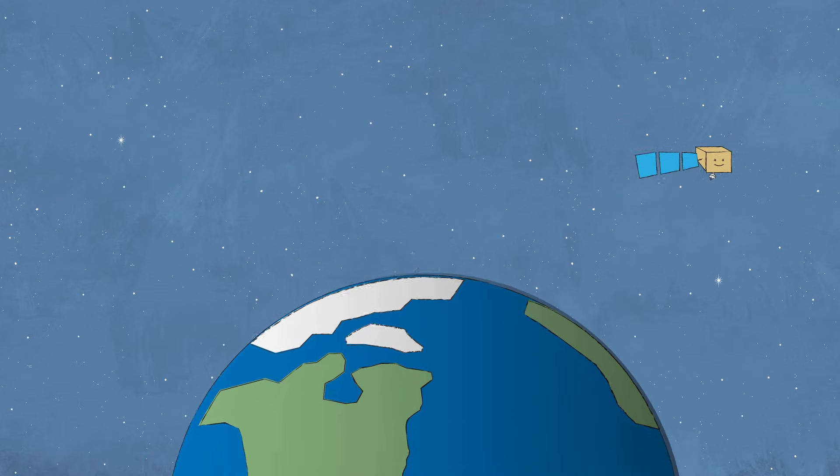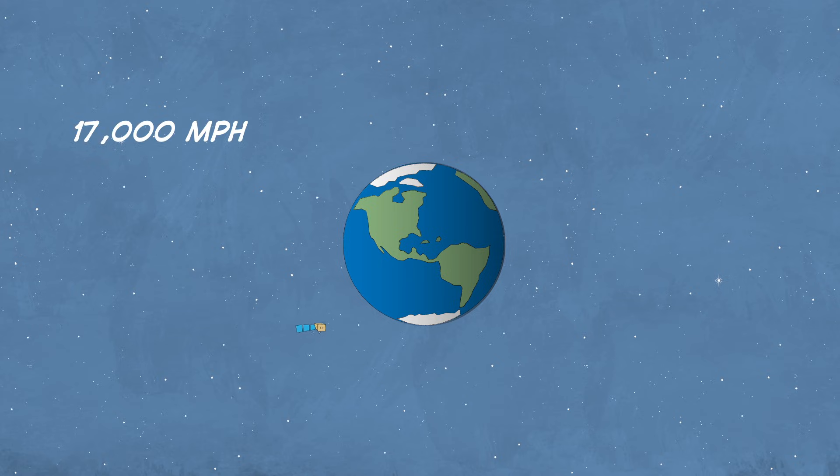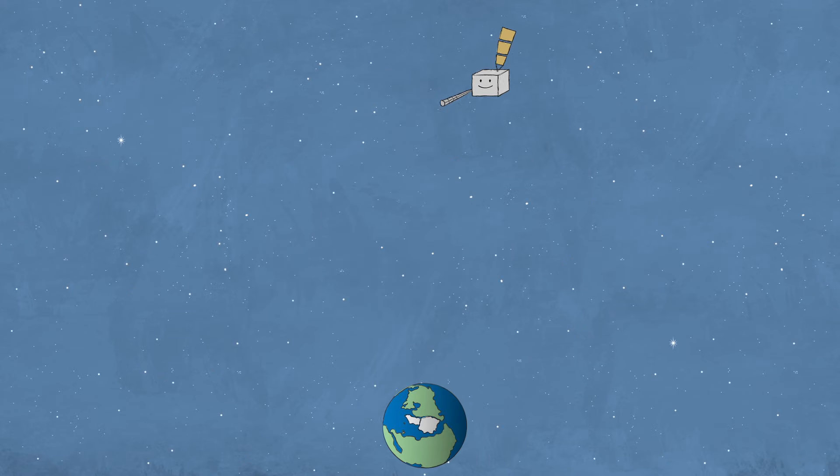For example, the satellite NOAA-20 orbits just a few hundred miles above Earth. It has to travel at 17,000 miles per hour to stay in orbit.